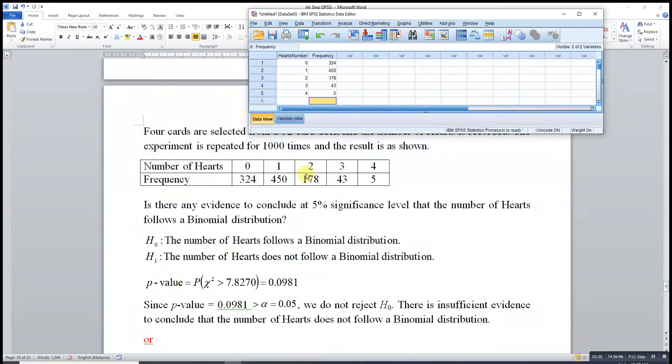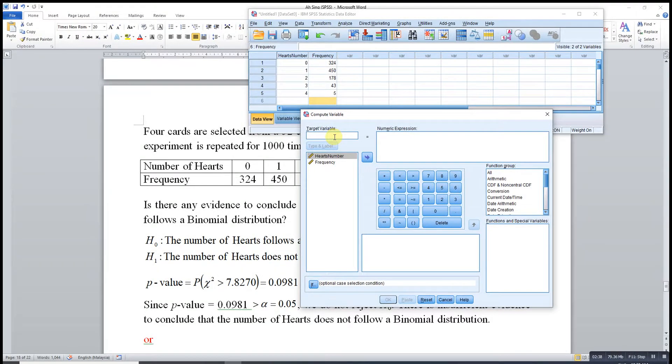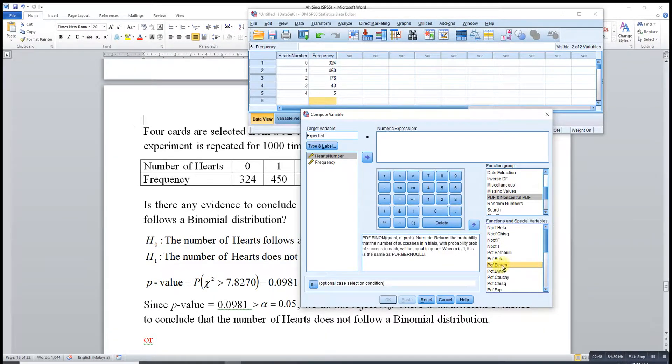After that, what we have to do is obtain the expected value. We can go to Transform, Compute Variable. The expected number. Look for PDF binomial distribution because we are going to test whether it follows a binomial distribution.